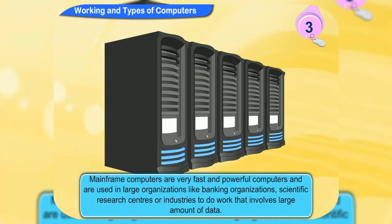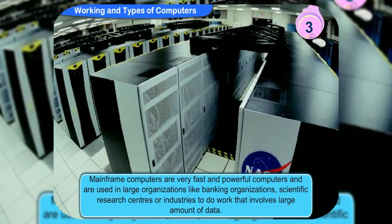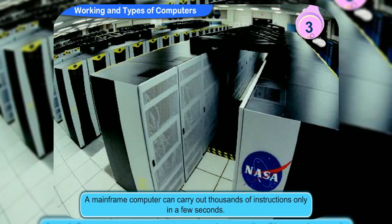Very fast and powerful computers are called mainframe computers. These computers are used in large organizations like banking organizations, scientific research centers, or industries to do work that involves large amounts of data. A mainframe computer can carry out thousands of instructions in only a few seconds.